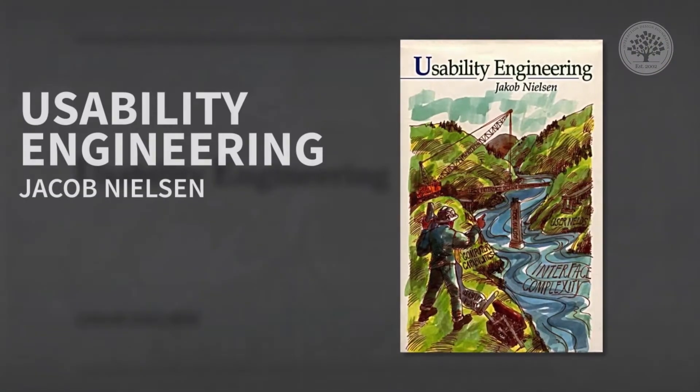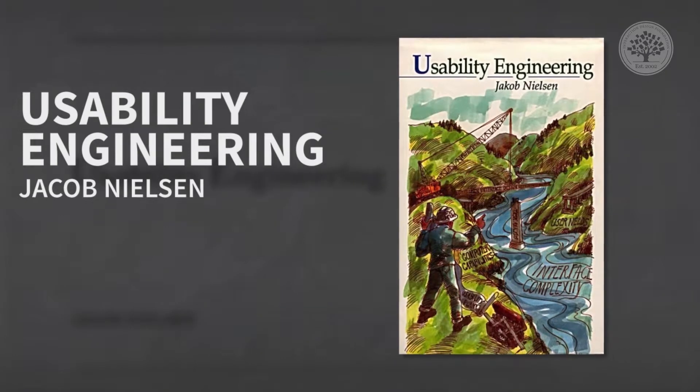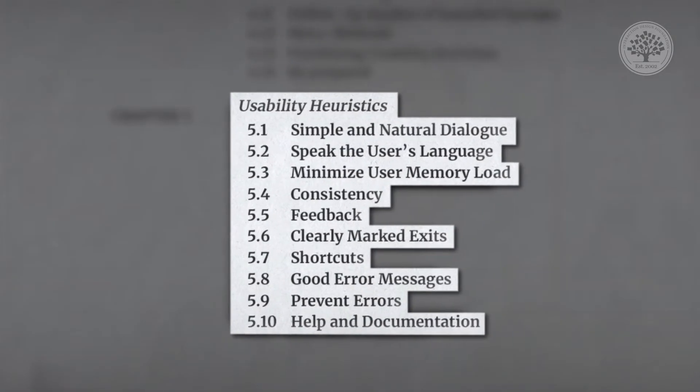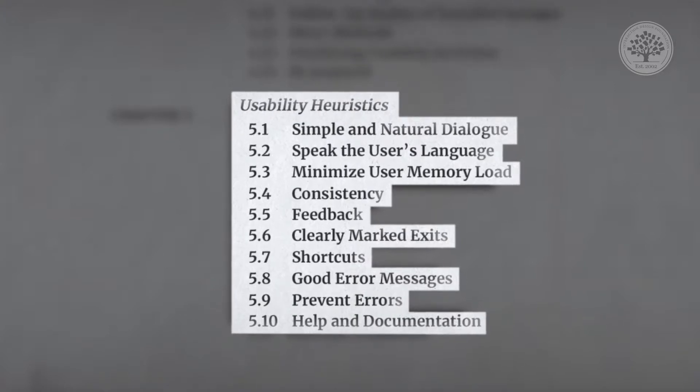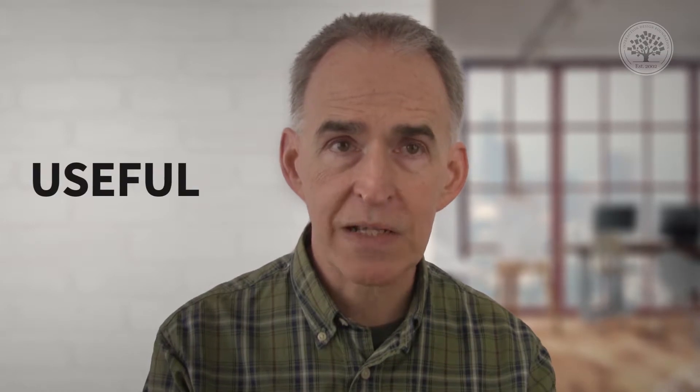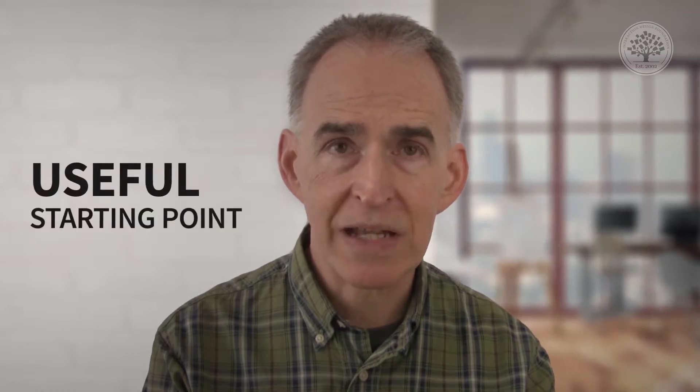Jacob Nielsen published his book on user interface engineering back in the early 1990s, and these are his 10 basic UI heuristics. They haven't really changed, although when doing something like benchmarking we have a much more detailed set of heuristics, but these are a useful starting point talking about fairly generic concepts.